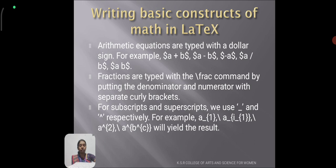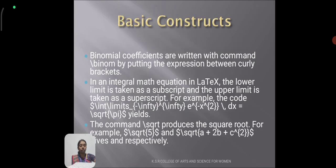Arithmetic equations are typed with a dollar sign. For example, $a+b$, $a-b$, $a\$. Fractions are typed with the \frac command by putting the denominator and numerator in separate curly brackets. For subscripts and superscripts, we use _ and ^ respectively. For example, a_{1}, a^{1}, a_{2}^{c}. The command \sqrt produces the square root, like \sqrt{5}.